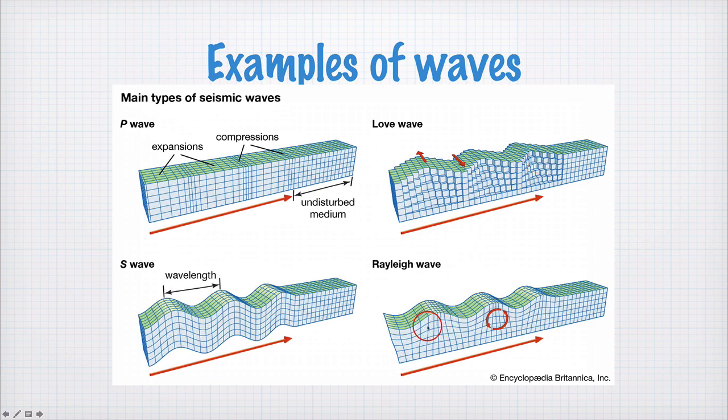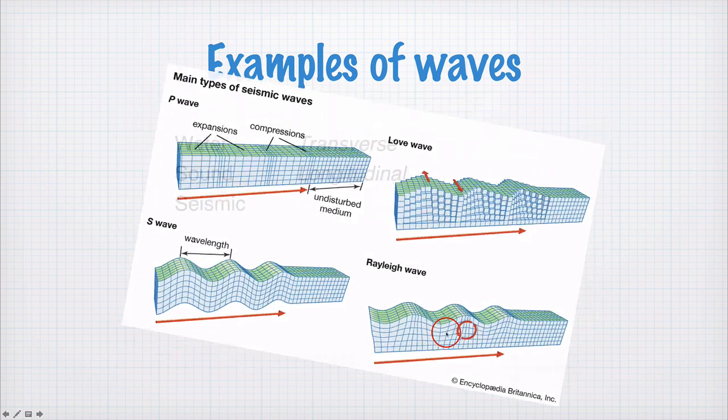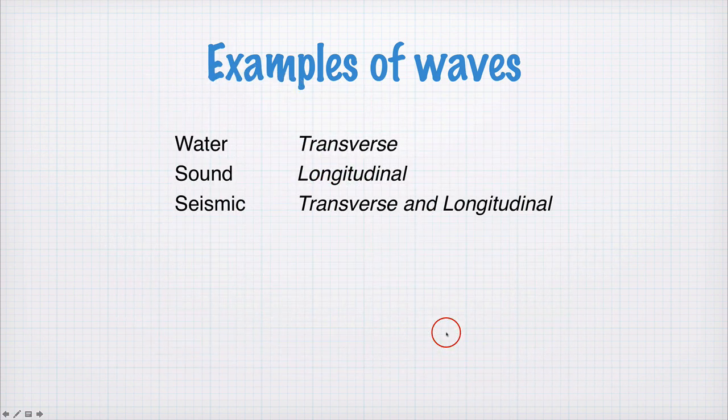And then there are Rayleigh waves, which are a combination actually of P and S. So they're sort of a compression, so longitudinal component as well as a transverse component. So seismic waves are transverse and longitudinal.